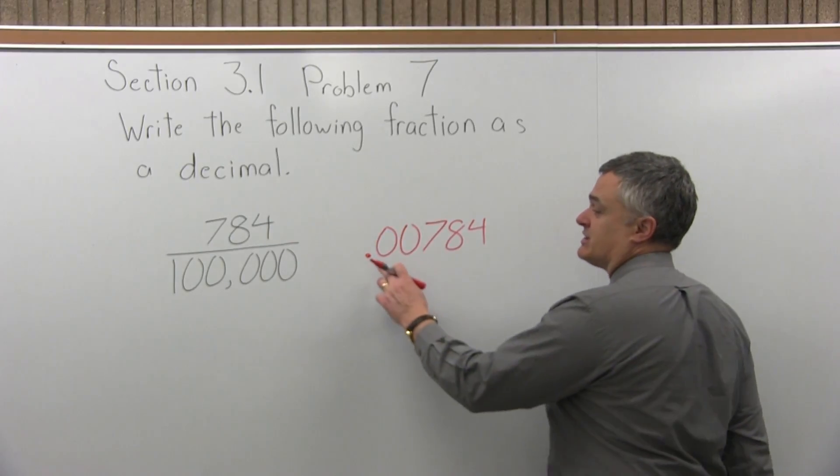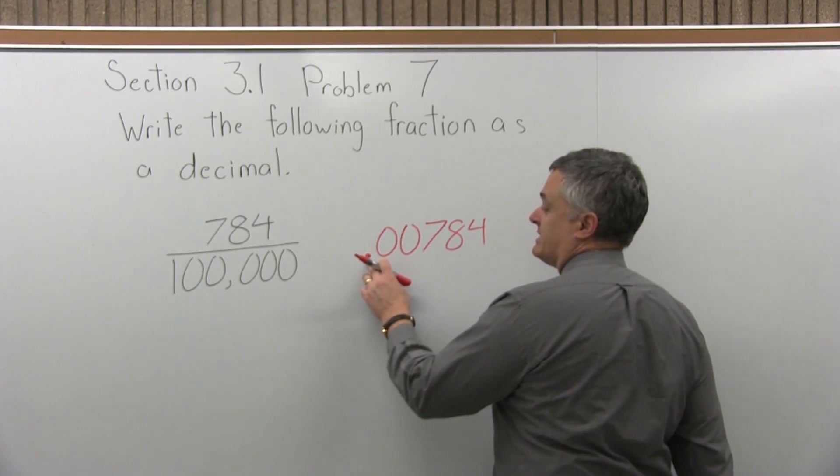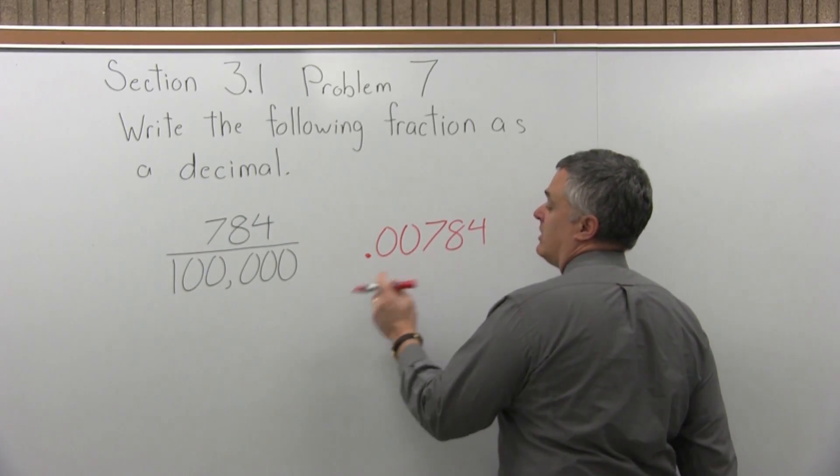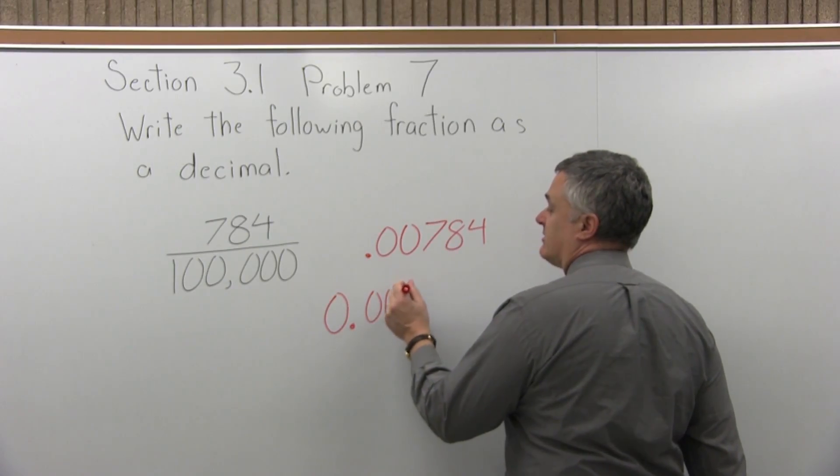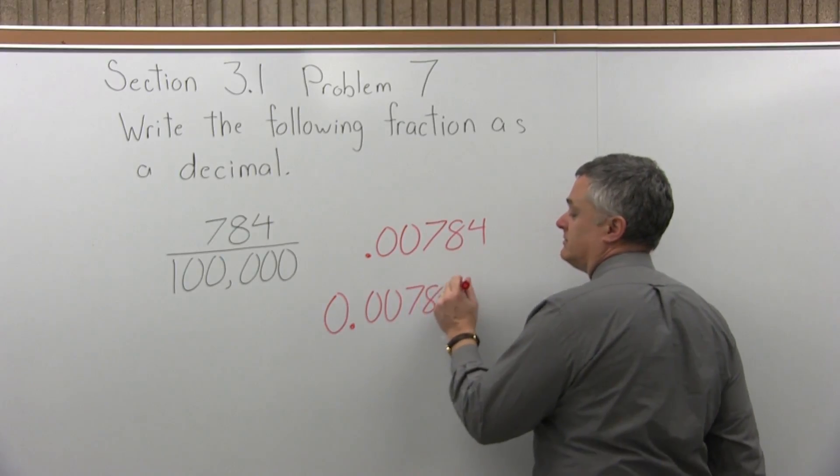Now you can write it just starting with the decimal point, .00784, which is okay. Or if you prefer, you can write it 0.00784.